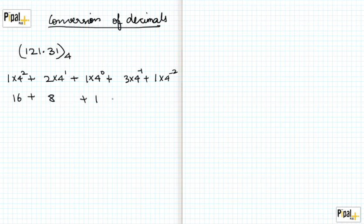So I get: this is 16, this is 8, this is 1, this is 3 by 4 which is 0.75, and this is 1 by 16 which is equivalent to 0.0625. When I add all of them up, I get 25.8125 in base 10.